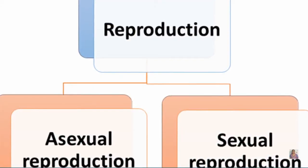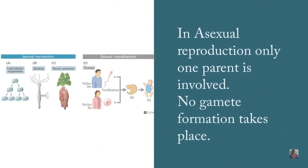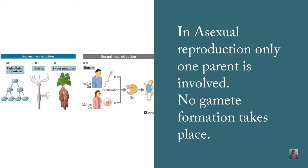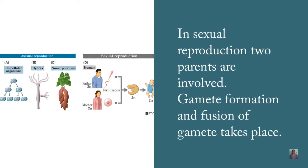There are two different types of reproduction. The first one is asexual reproduction and the second one is sexual reproduction. In asexual reproduction only one parent is involved and no gamete formation will take place. In contrast, sexual reproduction involves two parents, gamete formation takes place, and the fusion of male and female gametes leads to the formation of a new individual.